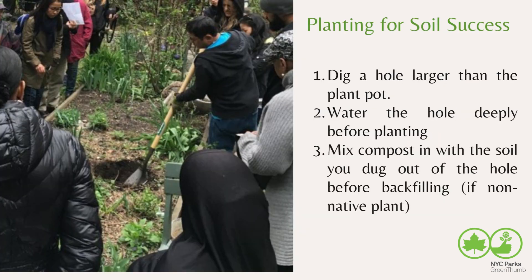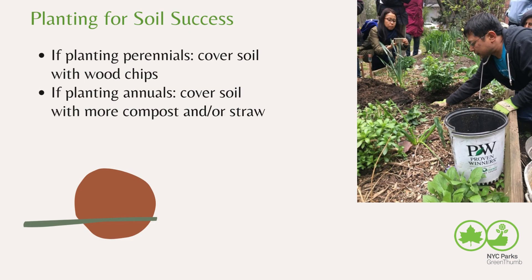When planting a new plant, dig a hole slightly larger than the plant pot, water the hole deeply, and mix compost in with the soil you dug out before backfilling. If planting perennials, cover the soil with wood chips — these will create a friendly environment for fungi, which perennials prefer in their soil. If planting annuals, cover the soil with compost or straw, which will create a bacteria-rich environment.